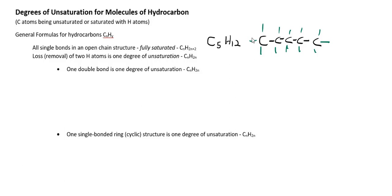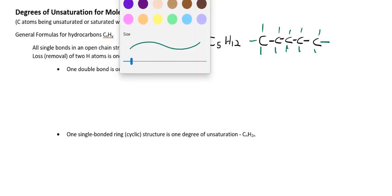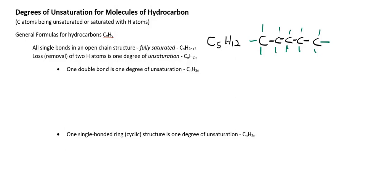No double bonds, no triple bonds, no ring or cyclic structures. Now I'm going to draw the line angle structure for this, which I'll be using quite a bit in this video. In a previous video, I explained how to draw line angle structures and what they represent. So here we have 1, 2, 3, 4, 5 carbons represented at the ends of the segments or the vertices.